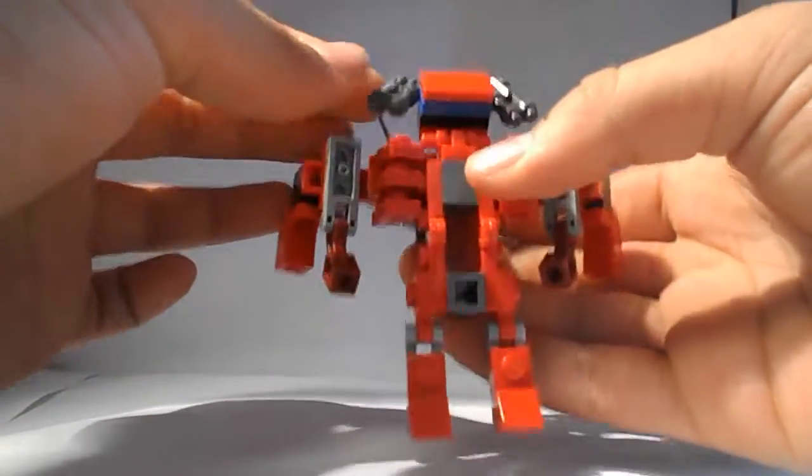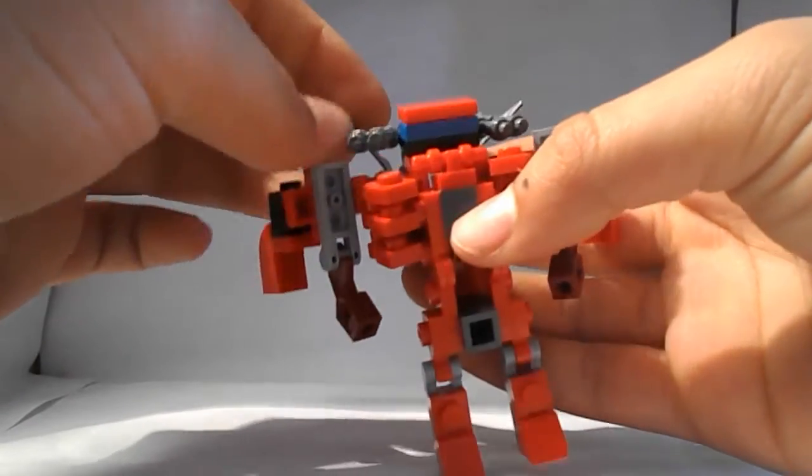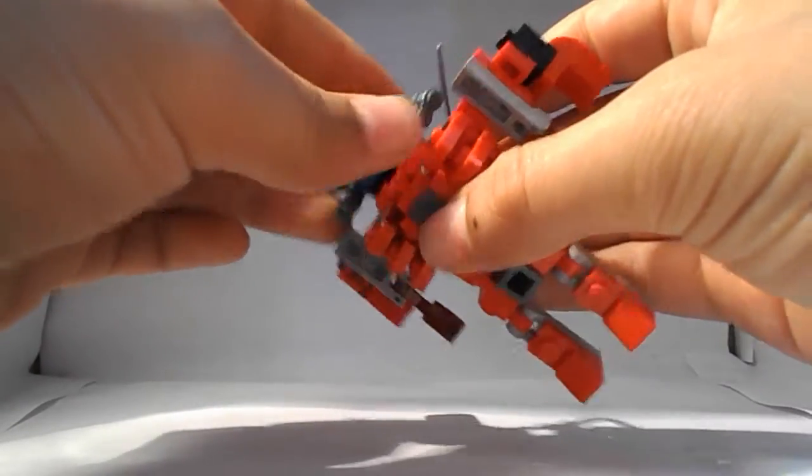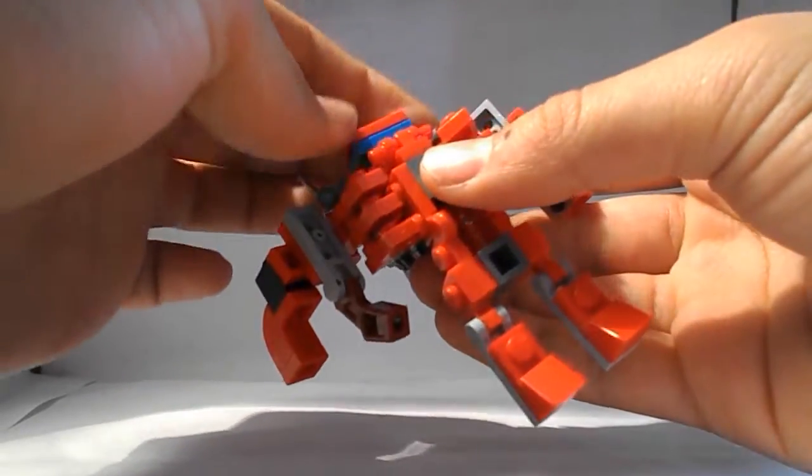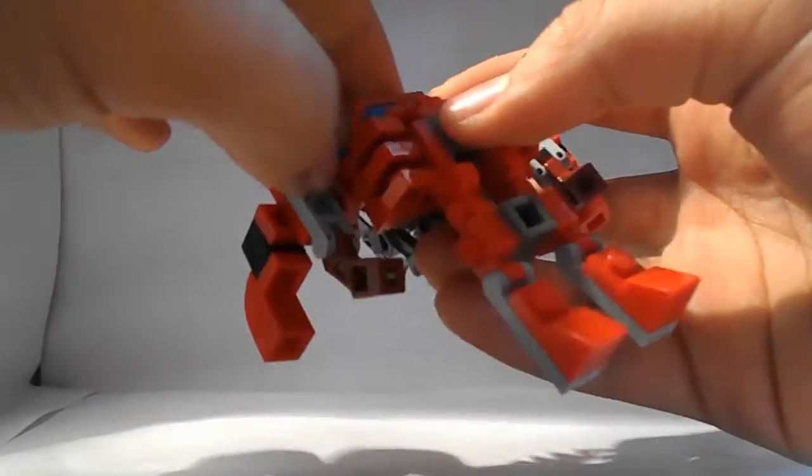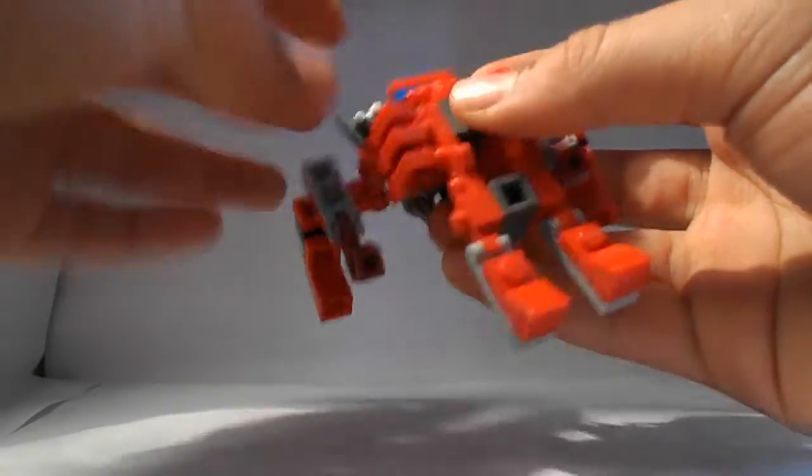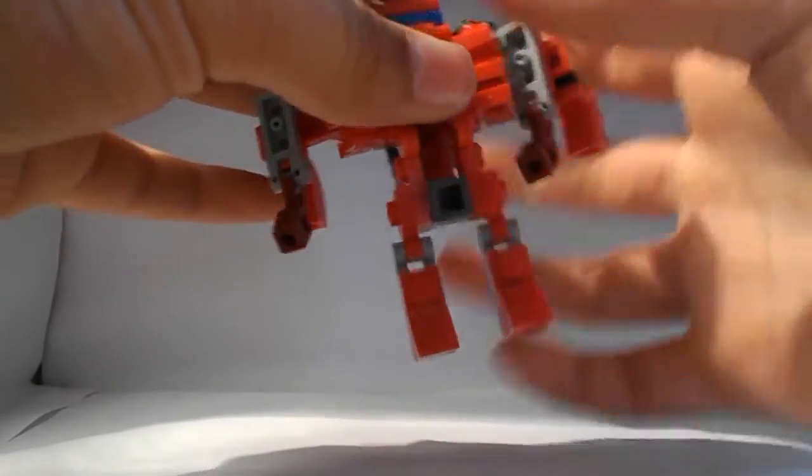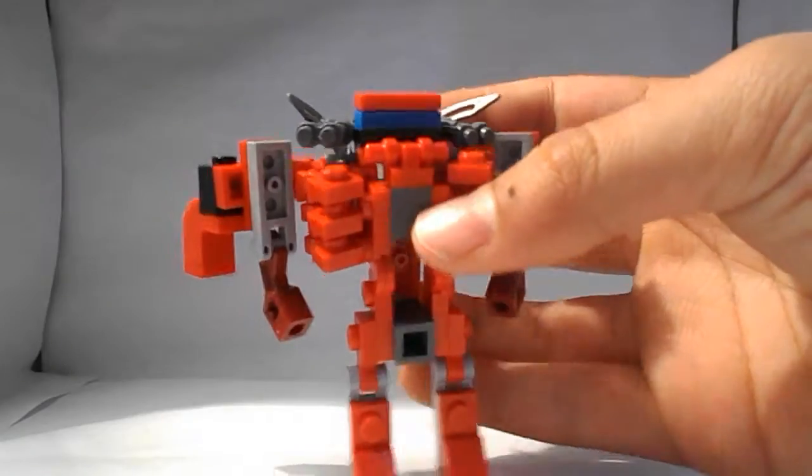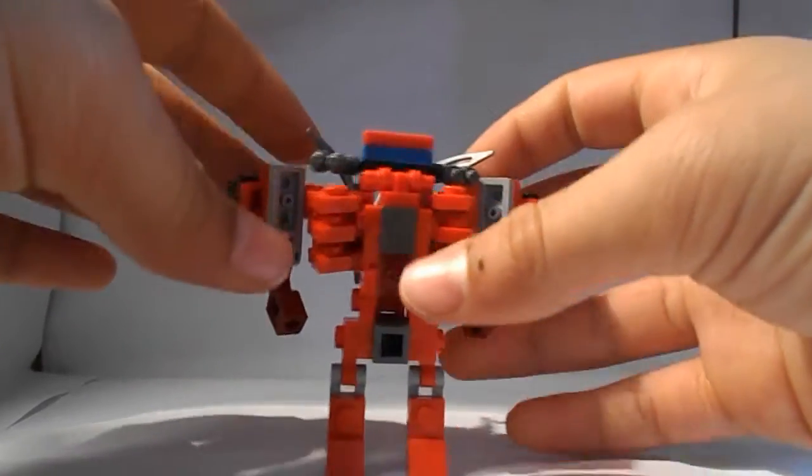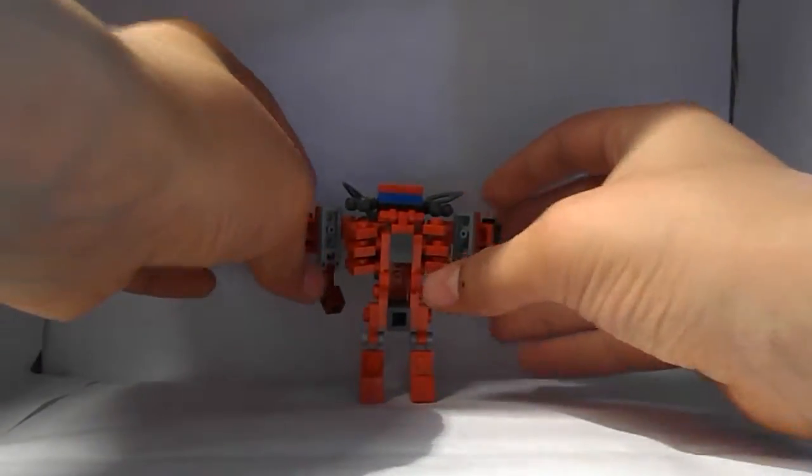And then you are going to rotate this piece down so it sits flush with the rest of the body. And those pieces will become shoulder cannons, and you will form the head like so.